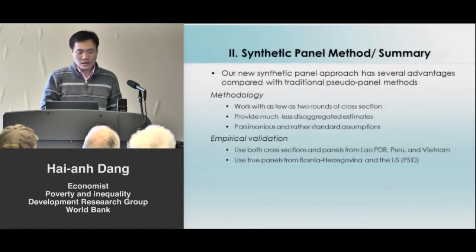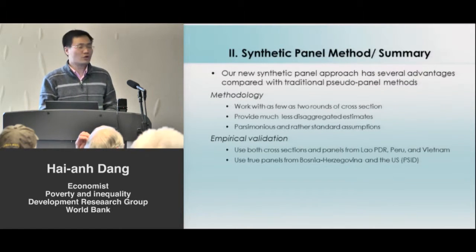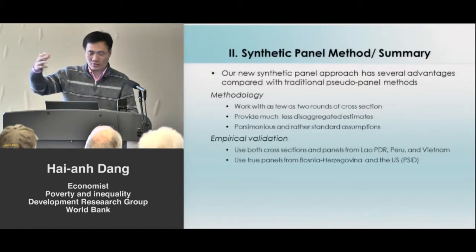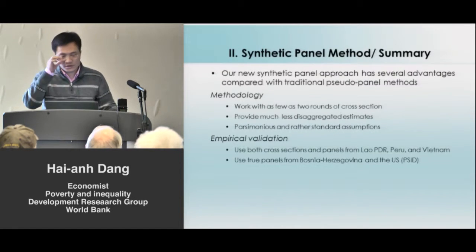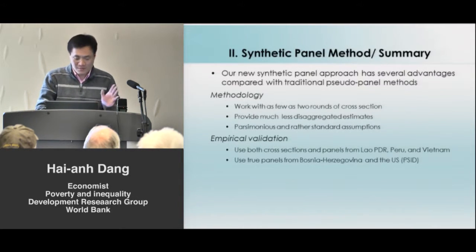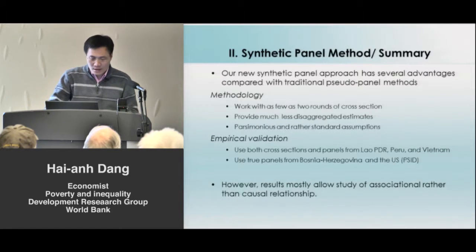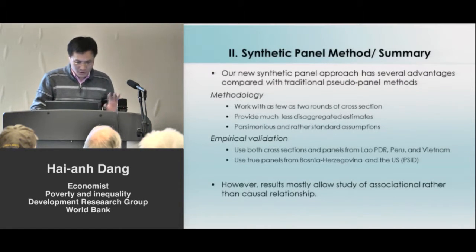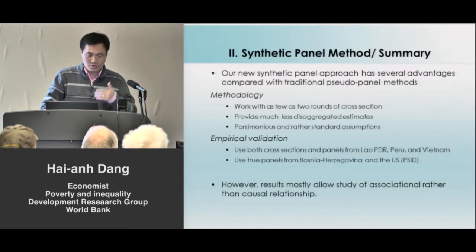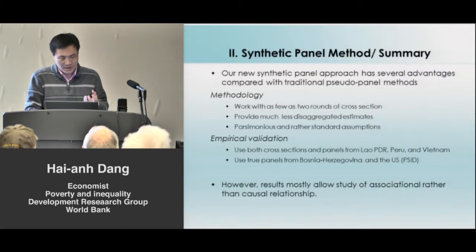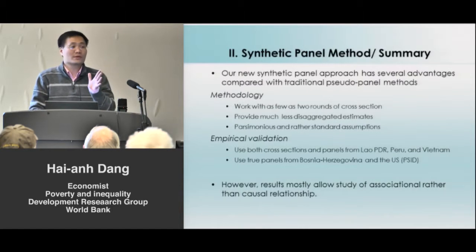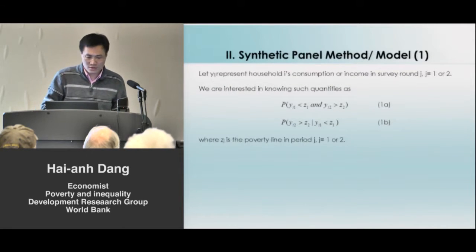We also compared our results with true panel data from high-income countries — Bosnia, Herzegovina, and the U.S., using the PSID, the Panel Study of Income Dynamics. At this stage, we still need to develop our method further to establish causal relationships, so for now we say we are looking at associations rather than causal relationships.